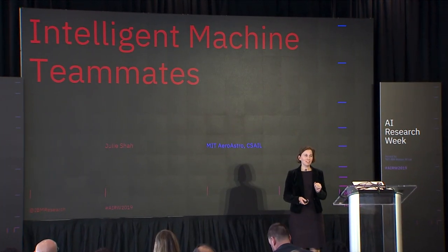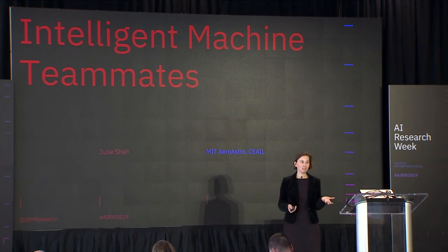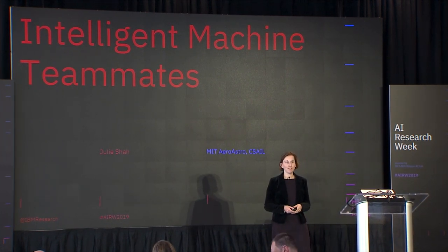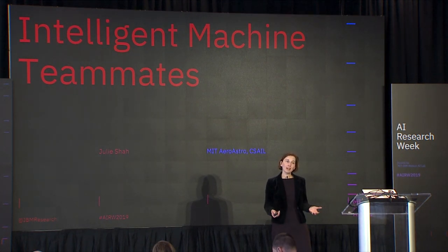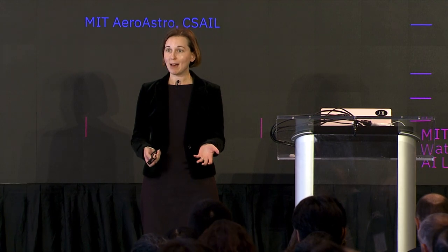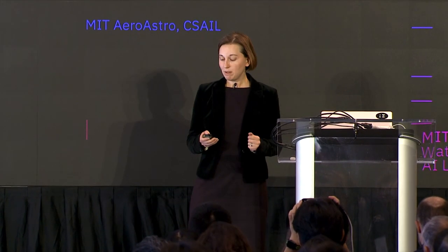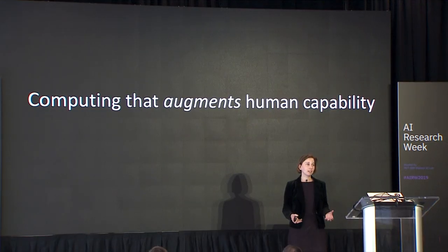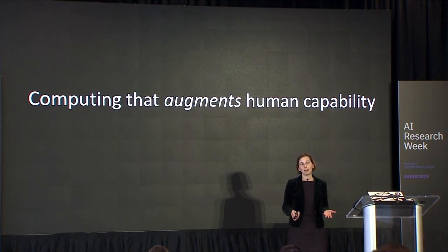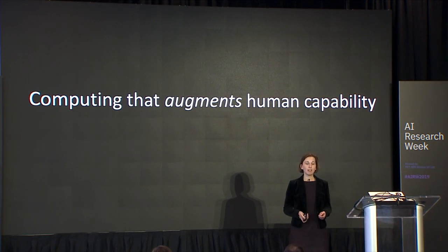My name is Julie Shaw. I lead the interactive robotics group in the Computer Science and Artificial Intelligence Laboratory and I'm faculty in the Aero Astro department. My lab and I work on reverse engineering the human mind to make robots that are better teammates. We work in an area surrounding the future of work — a time of growing anxiety about the role of AI, computing, and robots in our lives and their potential to supplant human work. Our vision is to develop computing that augments, not replaces, human capability.